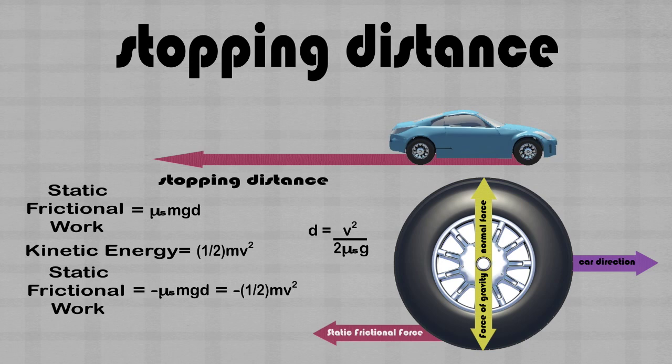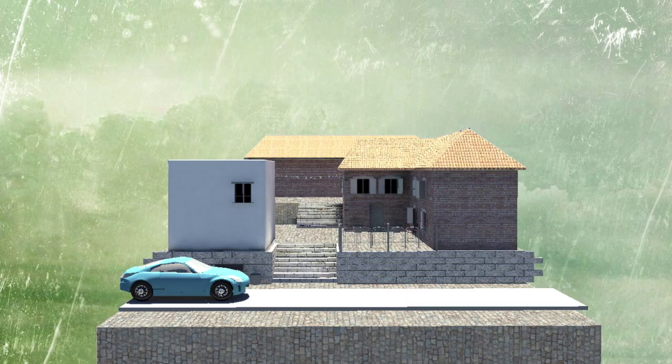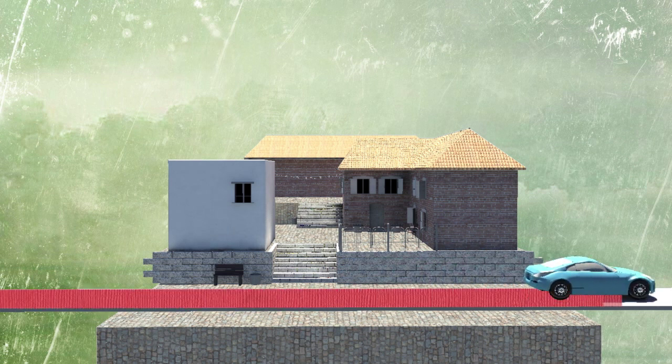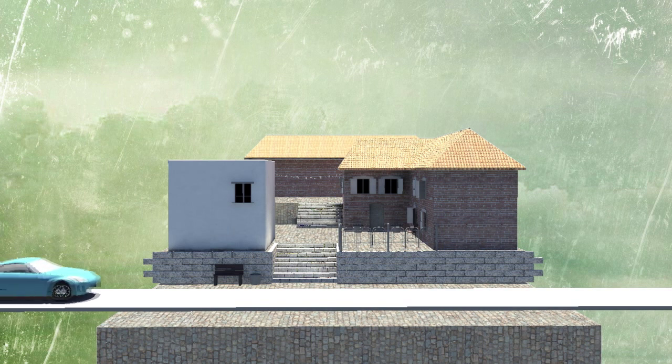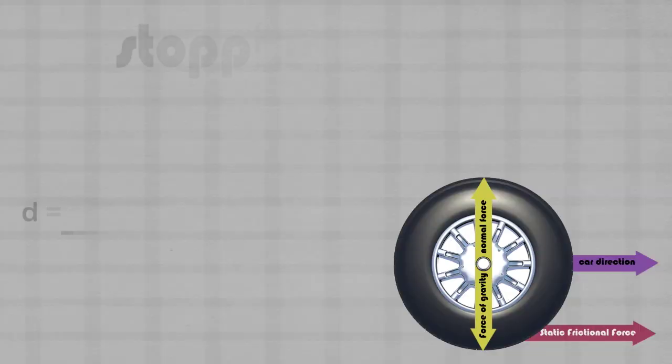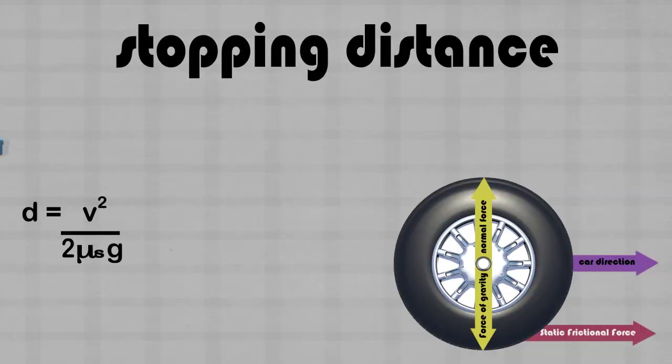Let's take a look at the stopping distance of a car going fairly fast. Compare this to the stopping distance of a car going relatively slow. The stopping distance is reduced when the speed of the car is reduced. We can use the equation we derived for stopping distance to see exactly how far the car went before it came to a stop.